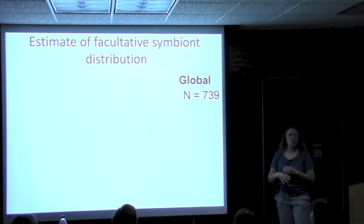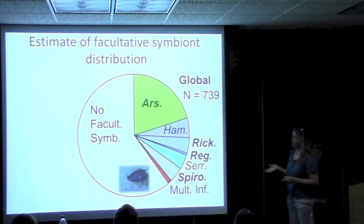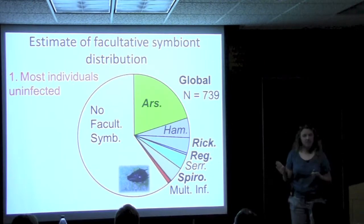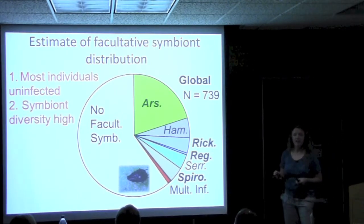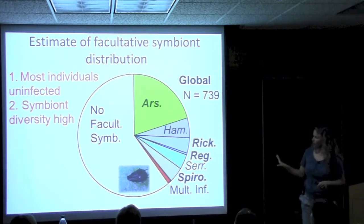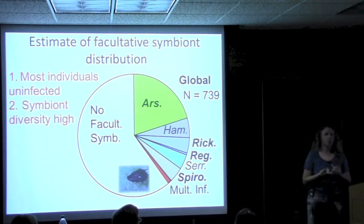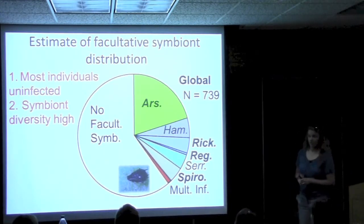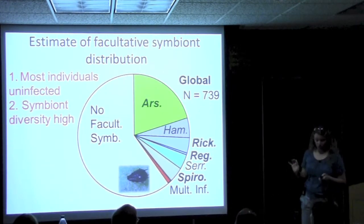Throwing all these aphids into one bin, the global picture looks like this: the majority of aphids were uninfected — more than half had no symbiont at all. But the part that did have symbionts showed really high diversity: we found every single symbiont we looked for. We sequenced at least one individual from each population that came up positive to confirm identity, and it was confirmed. So all six symbionts we looked for were present, which also suggests there are probably other symbionts we weren't looking for.